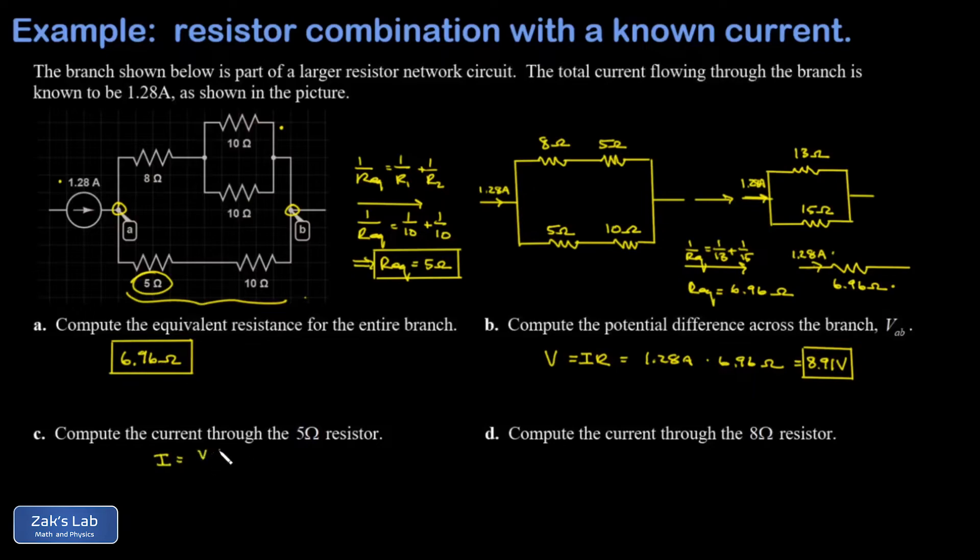So I is going to be V over R, and we have an 8.91 volt potential difference over a resistance for that lower branch of 15 ohms. This gives us 0.594 amps flowing through that lower part of the network and flowing through the 5 ohm resistor.